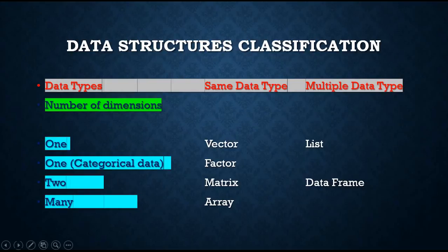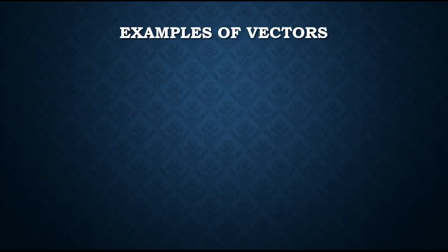The two-dimensional data structures include matrix and data frames. The difference between the two is that a matrix can hold only a single type of data, while a data frame can hold multiple data types. And the last one is the array, which has multiple dimensions and can hold only a single type of data.